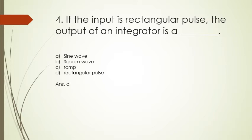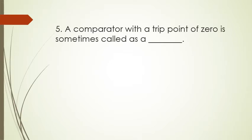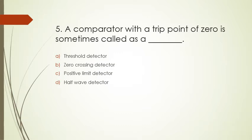Next question: a comparator with a trip point of zero is sometimes called a threshold detector, zero crossing detector, positive limit detector, or half-wave detector. The correct answer is zero crossing detector. Trip point of zero means you are taking the reference voltage of the comparator as zero volts.